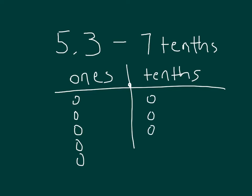The difficulty when we are subtracting 7 tenths here is that we can't take away 7 tenths because there are only 3 tenths here. So what we need to do is regroup one of these ones to the tenths place. And each of those ones is worth 10 tenths.